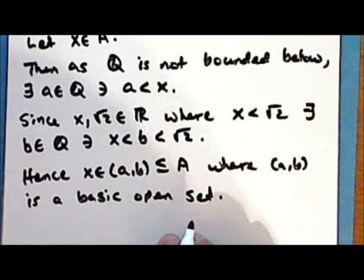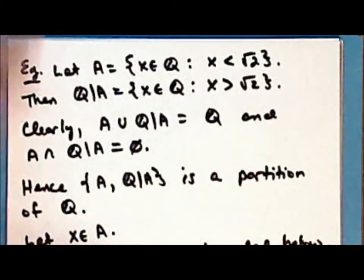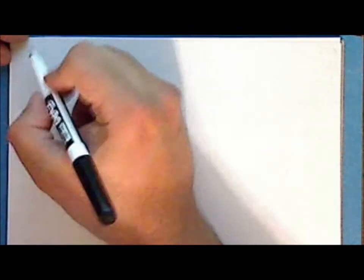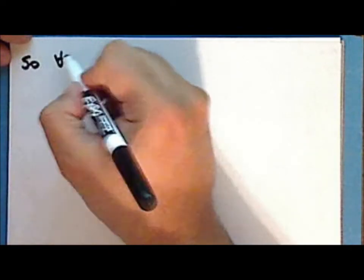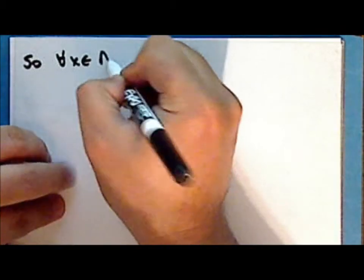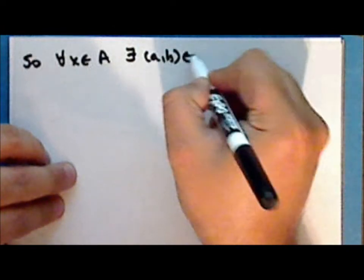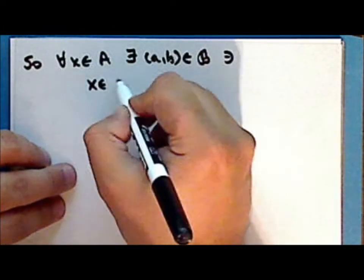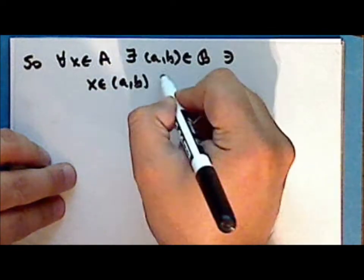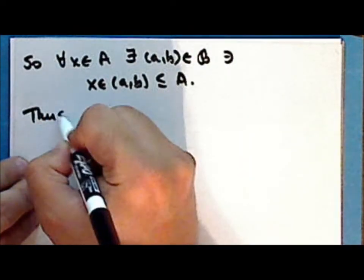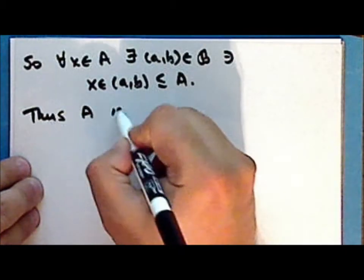Now we chose this point arbitrarily, and so for every point in the set A, there exists a basis element such that the point is in this basis element, which is a subset of set A, and thus the set A is open.